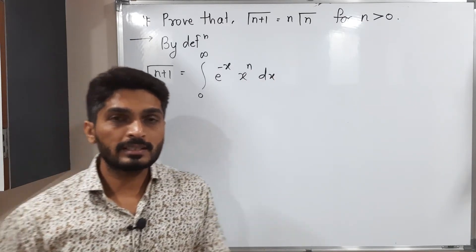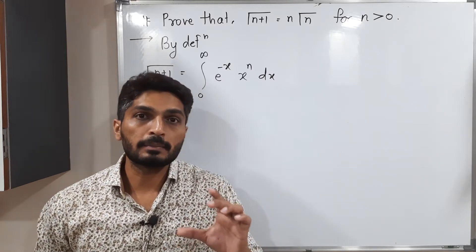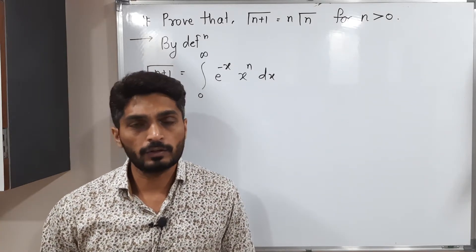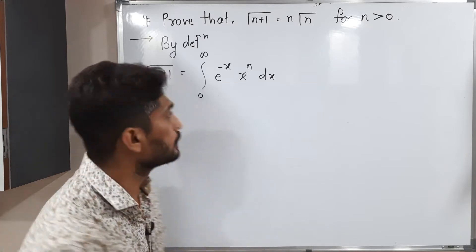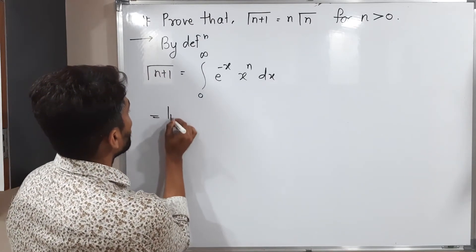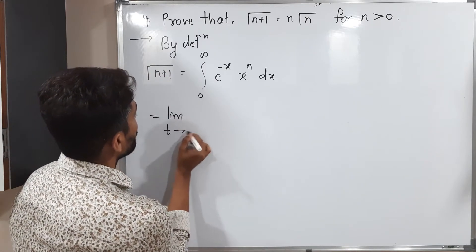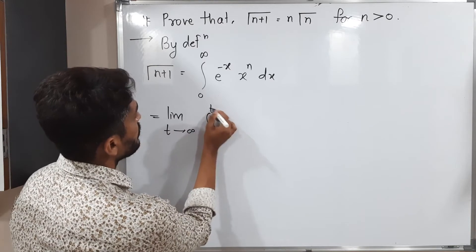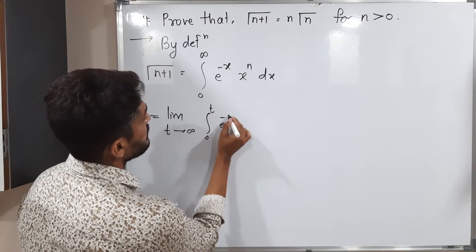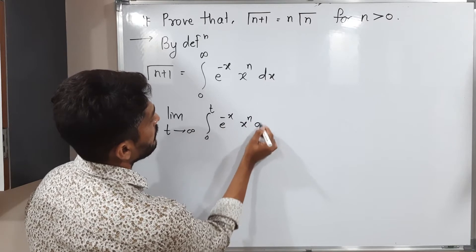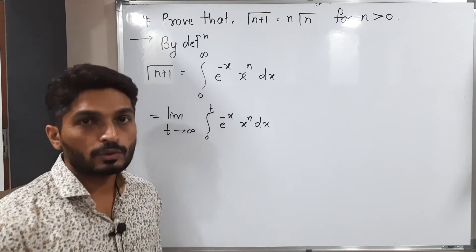So see this integral has a limit infinity, that means it is an improper integral. We cannot solve it directly. What will I do? I will write here limit t tends to infinity, 0 to t, e raised to minus x, x raised to n dx. So now we can solve the integration.